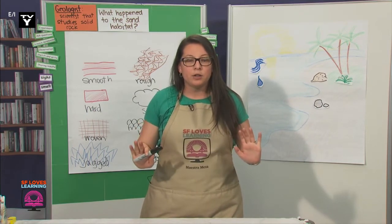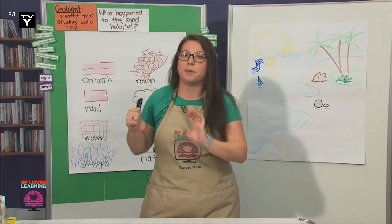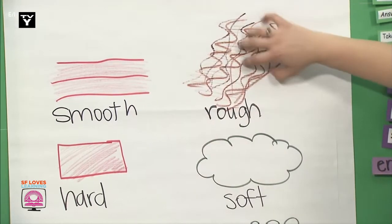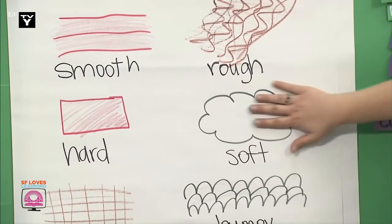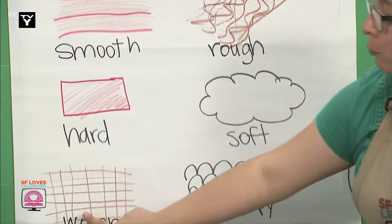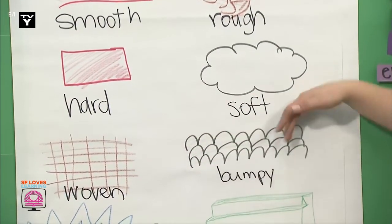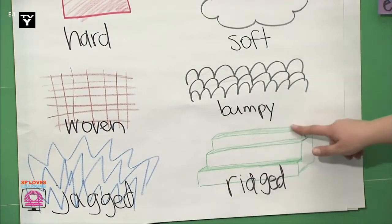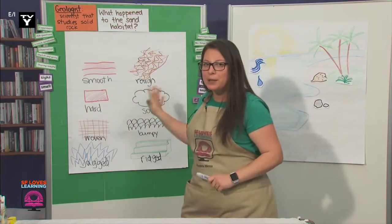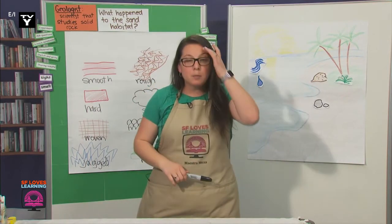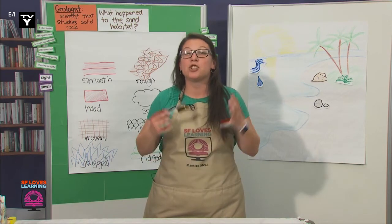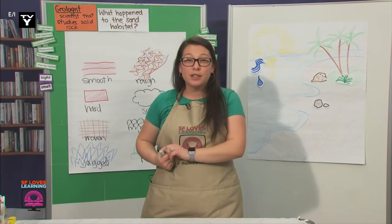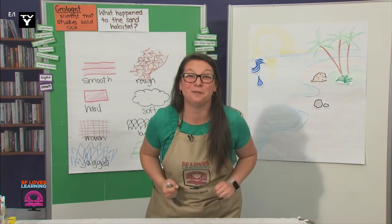But we'll have to stop here, geologists. Let's reread the textures that we have on this chart: smooth, rough, hard and soft, woven, bumpy, jagged, and ridged. Great job. This is going to help us understand our problem a little bit more. Tomorrow, I'm going to bring in a model that should help us visualize why some rocks wash away and some don't. Enjoy the rest of the day — I'm really excited to learn with you tomorrow.